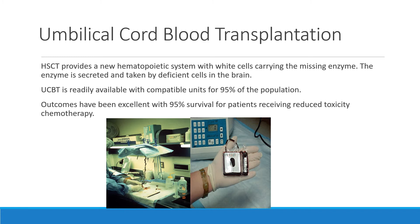Umbilical cord blood transplantation provides a new hematopoietic system with white cells carrying the missing enzyme. This enzyme can be secreted and taken up by deficient cells — a mechanism demonstrated in many lysosomal storage diseases including Krabbe. Because cord blood is readily available with compatible units for about 95% of the population, it is the preferred source for this rapidly progressing disease. Outcomes have been excellent, with about 95% survival for patients receiving reduced toxicity chemotherapy.